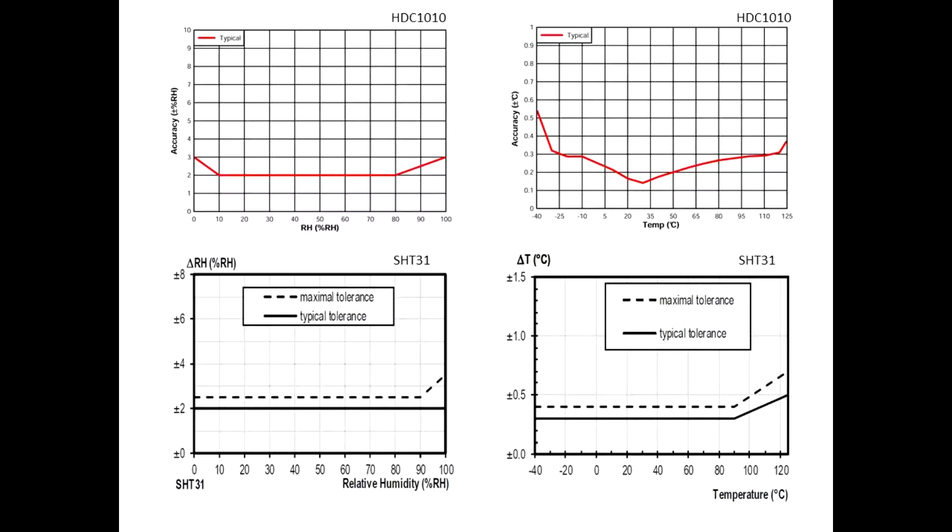Here's the graphs from the data sheets. Note that on the HDC1010 for humidity at 10% and 80% the accuracy starts to tail off a tiny bit by one extra percent.